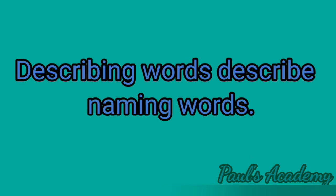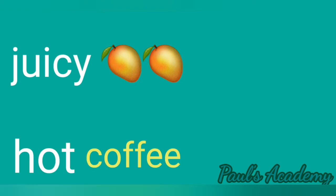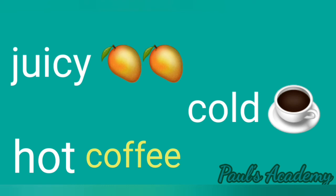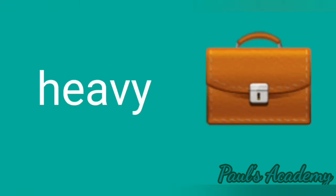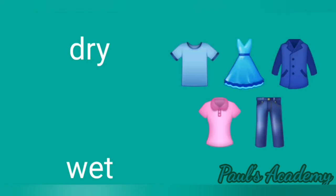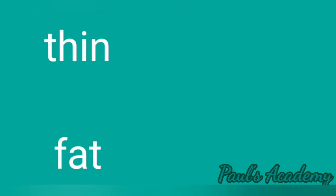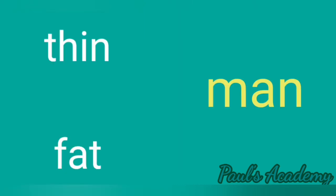Some more describing words are: juicy — for example, juicy mangoes. Hot — hot coffee. Cold — cold coffee. Heavy — heavy bag. Dry, wet — for example, dry cloth, wet clothes. And thin, fat — thin man, fat man.